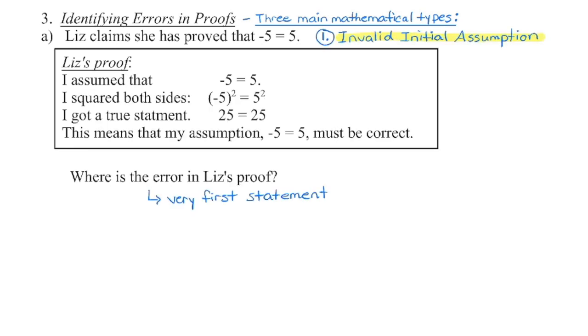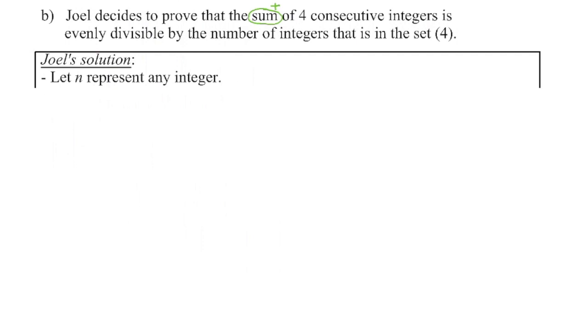You will also have to be very careful when you set up your arguments in this particular unit, because as soon as you make a mistake, everything that follows is now incorrect. In the second example, Joel is trying to prove that the sum of four consecutive integers is evenly divisible by the number of integers in that set. So in this case, four.